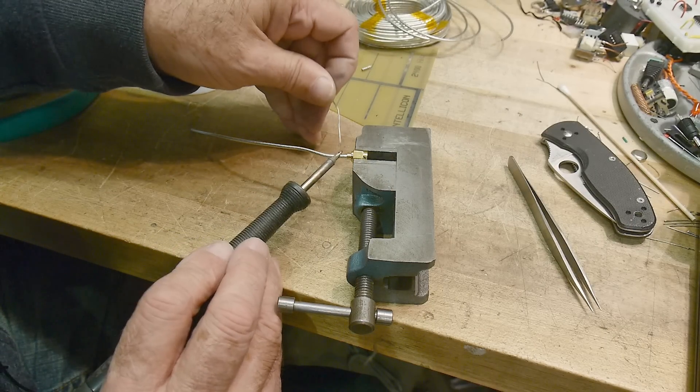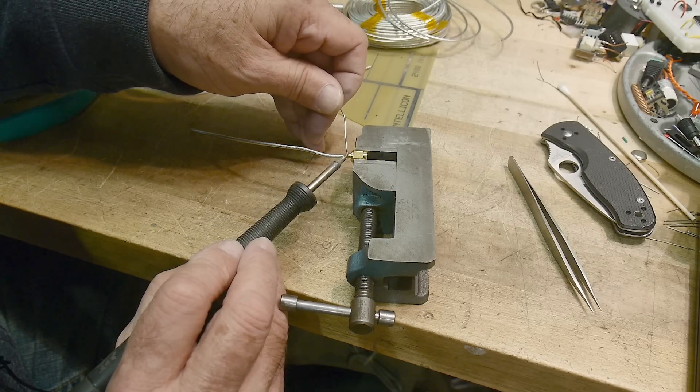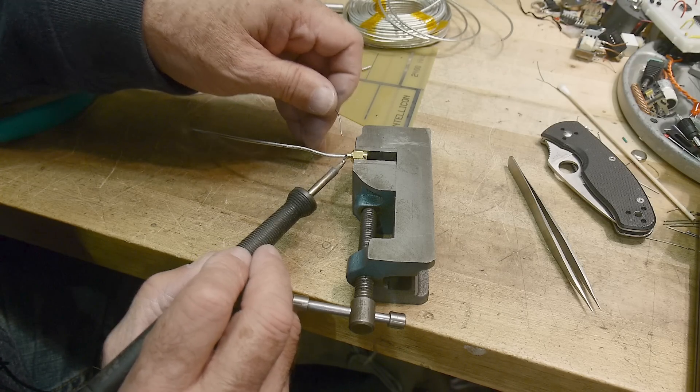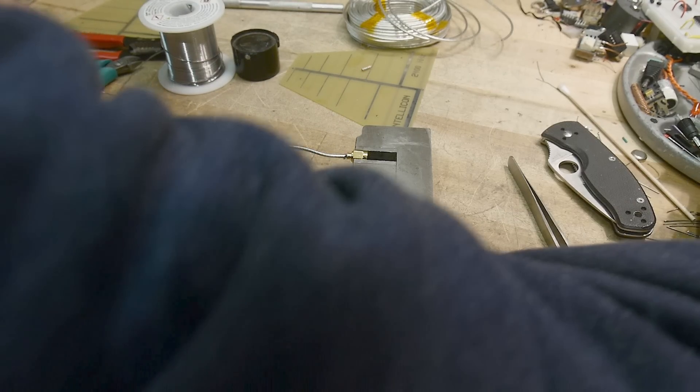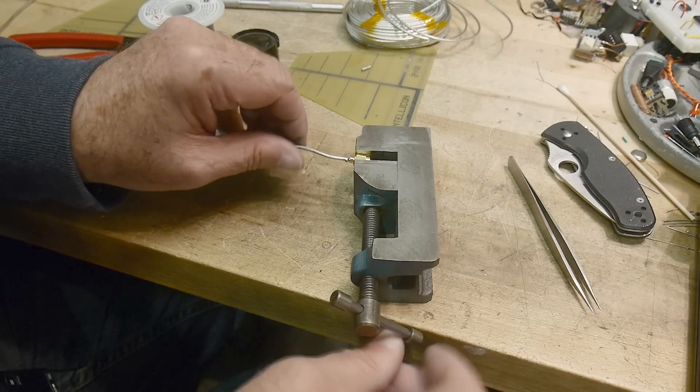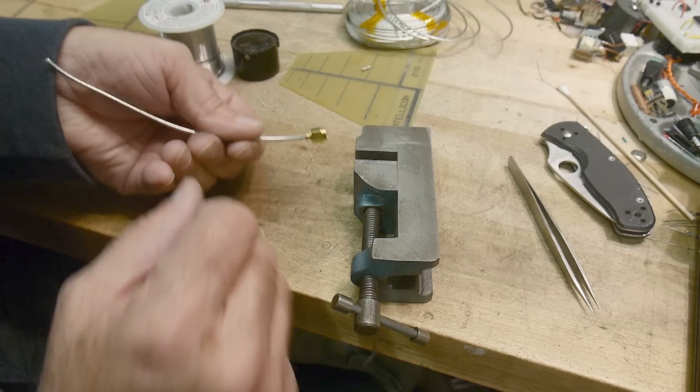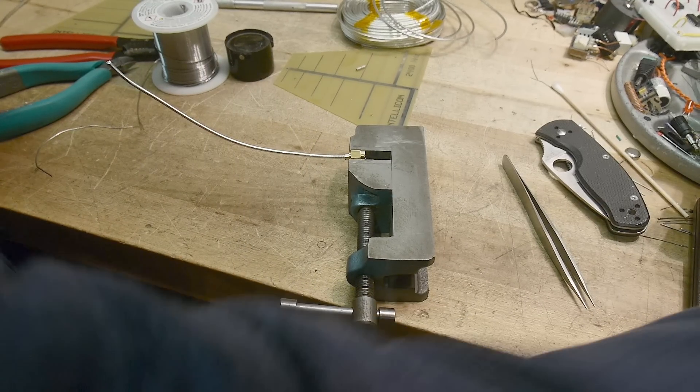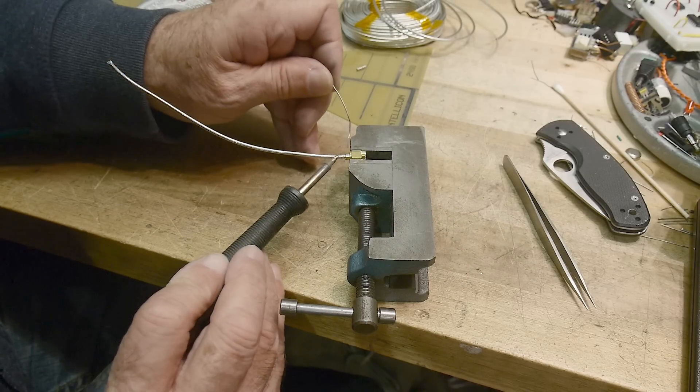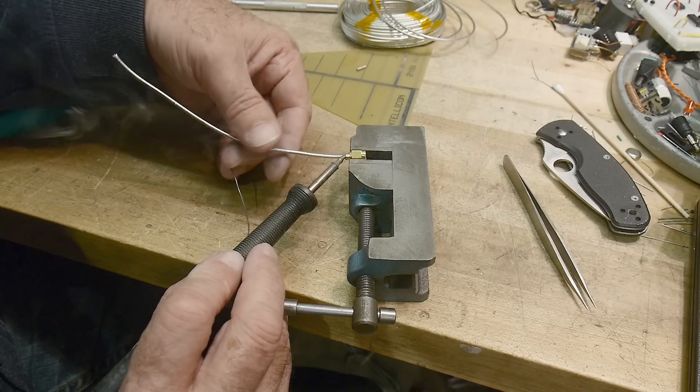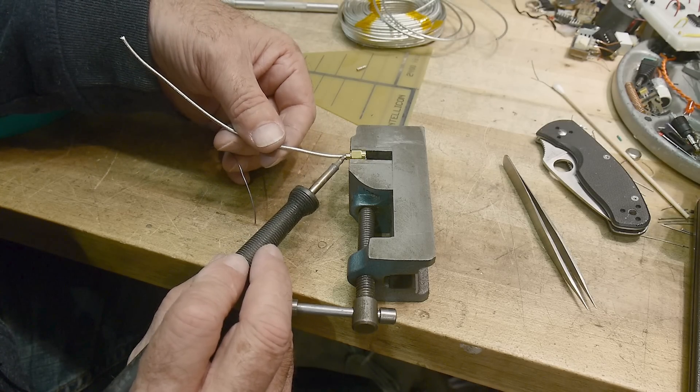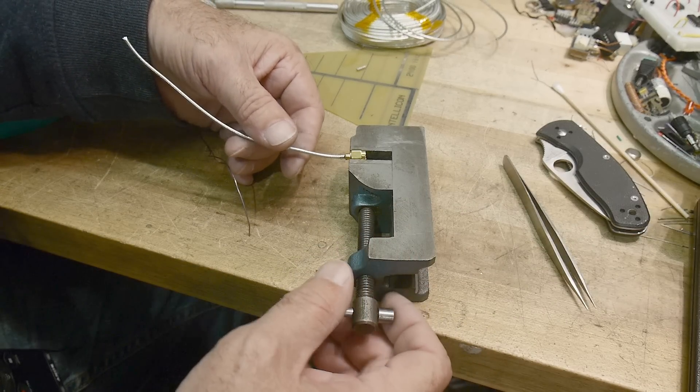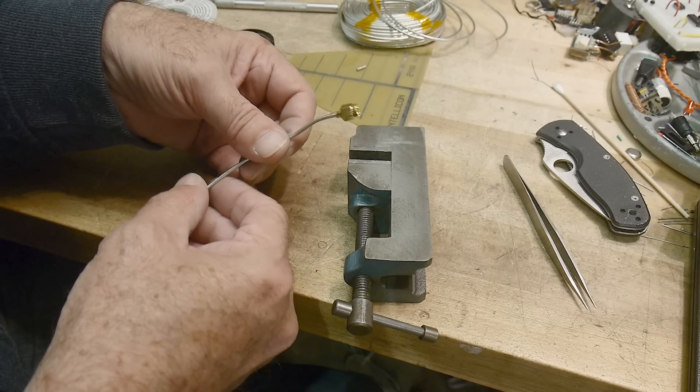All right. Let's put some solder right here and try to get it to wick around. And we'll do the backside. I need to put this on a rotary table. There you go. That looks very good.